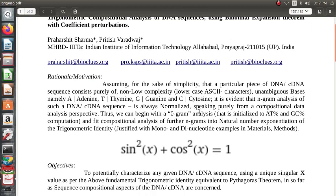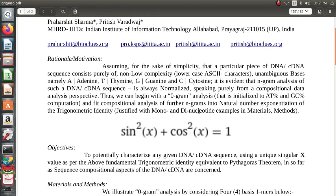So what is the rationale or motivation behind our work? Basically, we are assuming that for the sake of simplicity, a particular piece of DNA or cDNA sequence consists of purely non-low complexity unambiguous bases, namely adenine, thymine, guanine, and cytosine. And it is evident that when we do an n-gram analysis of such a DNA or cDNA sequence, it is always normalized in the sense that the relative frequency of the bases adds up to 1.